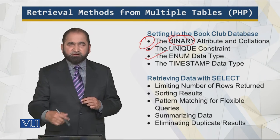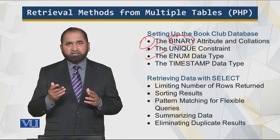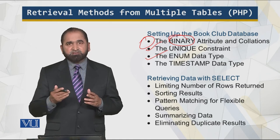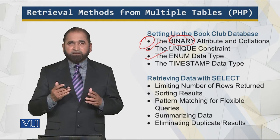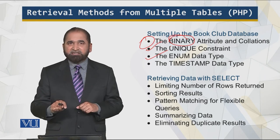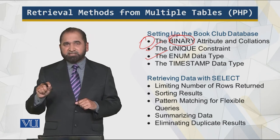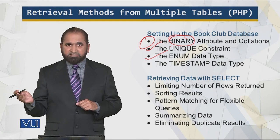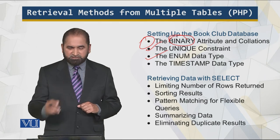When we retrieve data from the database using SQL commands, we can reduce the number of rows, order them, group them, sort them, and summarize them. Remember that these operations are not happening on the client end. The client makes a request, which passes through the application tier and then goes to the database tier, and the results are sent to the web server where pages are generated.